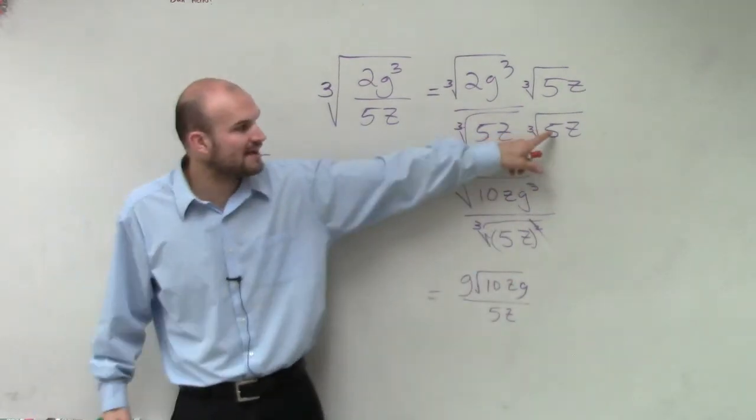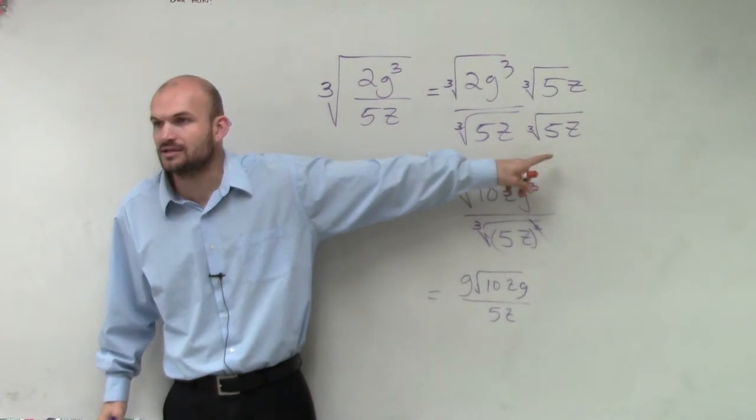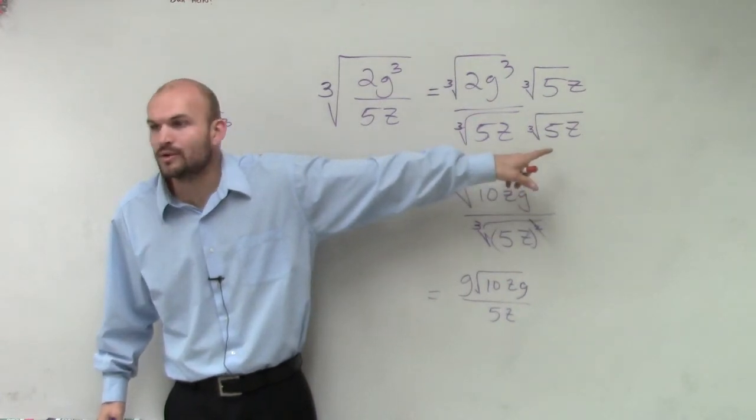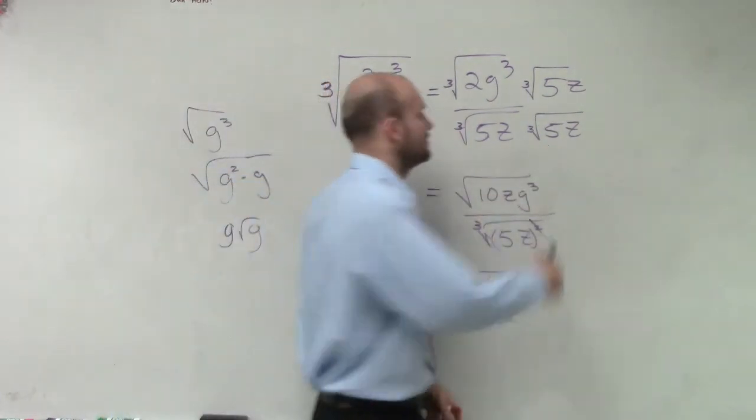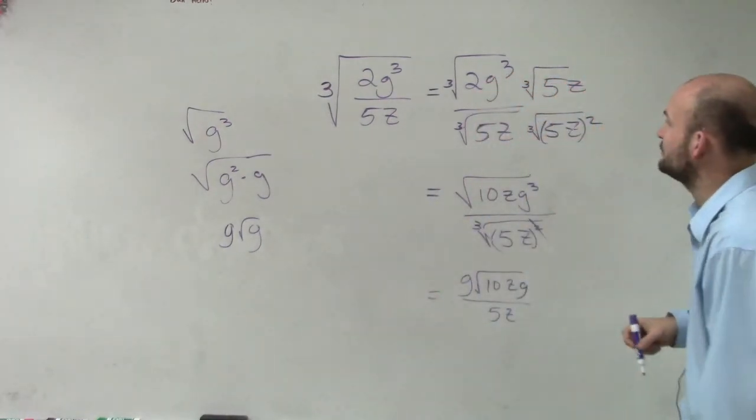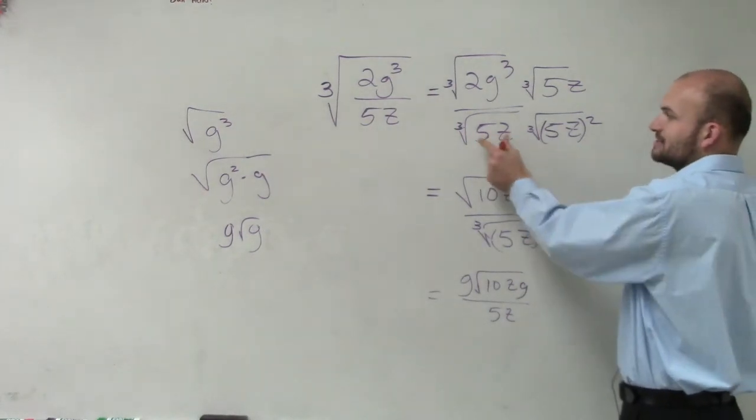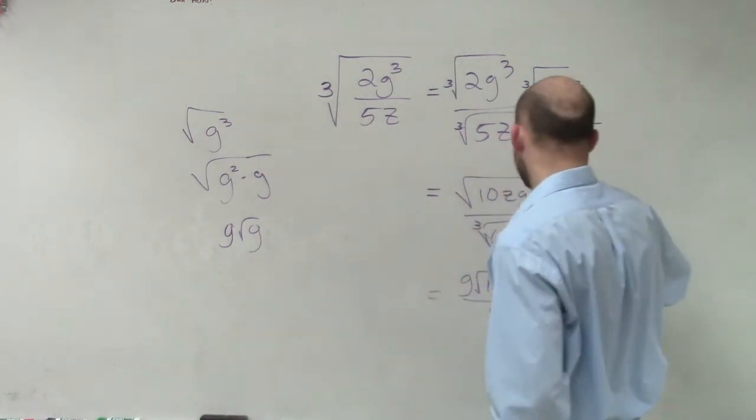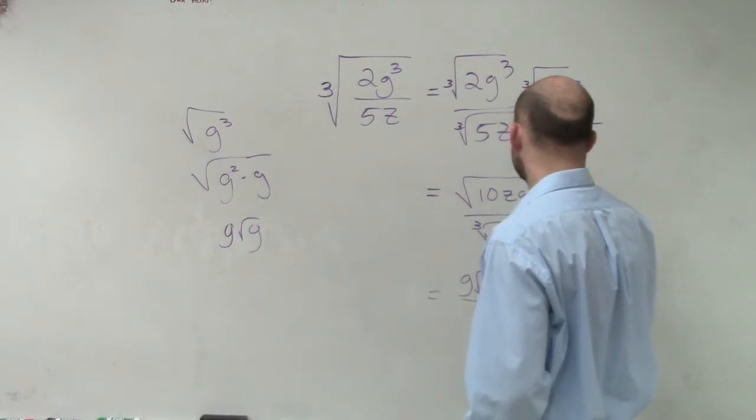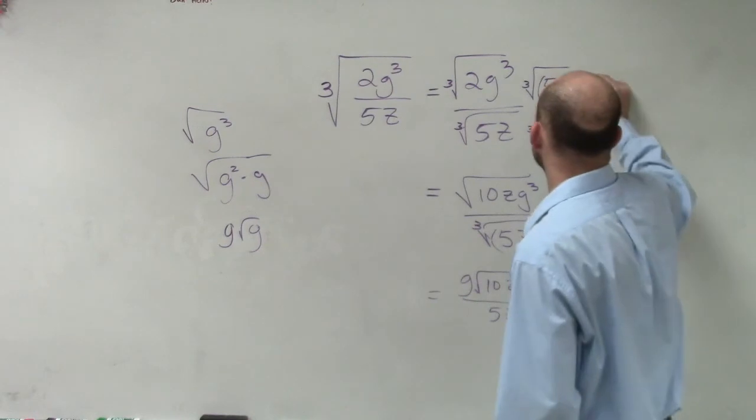So by multiplying by 5z is not going to cut it. So what do we need to multiply by? 5z squared. Now, why 5z squared and not 5z cubed? Because we already were multiplying by 5z. So 5z squared times 5z will now give you 5z cubed. Does that make sense? And then we'd have to do the same thing up top here.